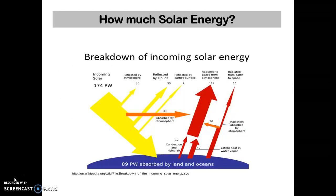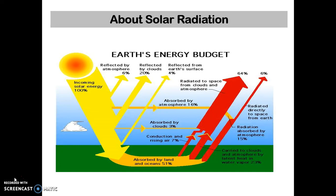How much solar energy do we have? The incoming solar energy is 174 petawatts and that absorbed by the land and ocean is 89 petawatts; the rest is reflected. About solar energy radiation: 6% is reflected by the atmosphere, 20% by the clouds, 4% by the earth's surface, and the rest is absorbed by the land.